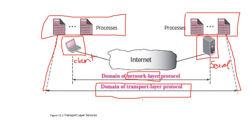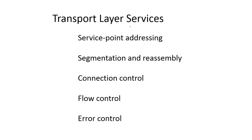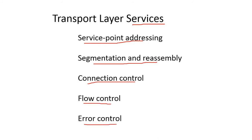Client system communicates with the server system, but here we say processes are communicating with each other - client process communicating with server process. That is the feature or function provided by the transport layer. You can now differentiate the services of transport layer and network layer: network layer connects device to device, while transport layer connects process to process.